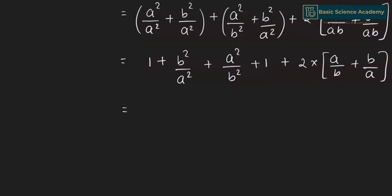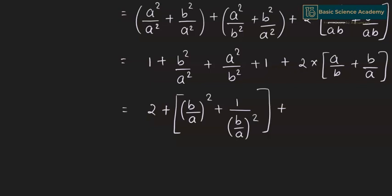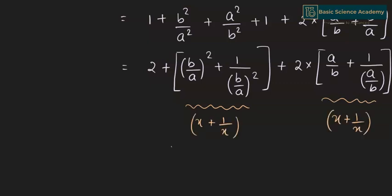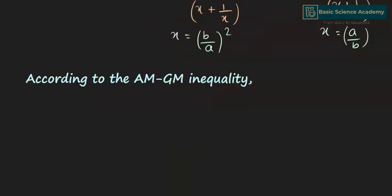This simplifies to 2 + (B/A)² + 1/(B/A)² + 2·(A/B + 1/(A/B)). These two grouped terms are each in the form of x + 1/x, where x = (B/A)² for the first pair and x = A/B for the second pair.